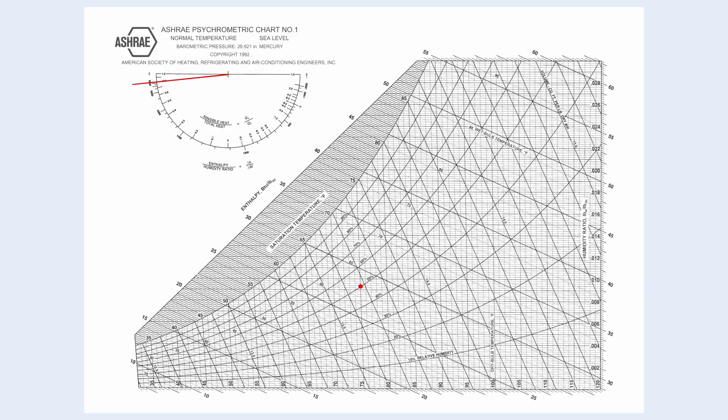Next, we copy the sensible heat ratio line to the back of the indoor design temperature. Along this line, we mark the supply air temperature at 57 degree Fahrenheit.